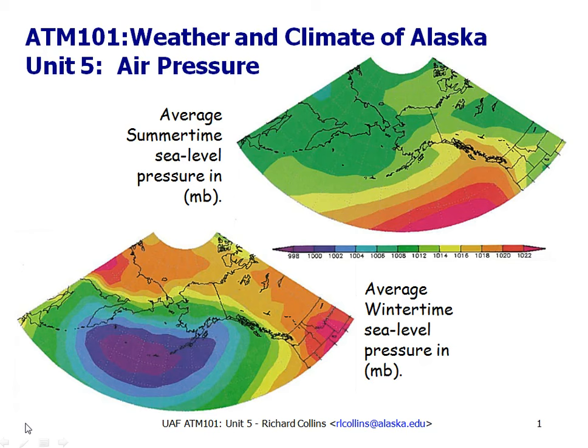In summertime, low pressure forms over the mainland as the summer sun heats the land. This low pressure is associated with the pop-up convection showers that form in the afternoon in the Tanana Valley. The Aleutian Low has completely disappeared. In this unit we will investigate how pressure patterns determine the weather patterns that influence our lives.